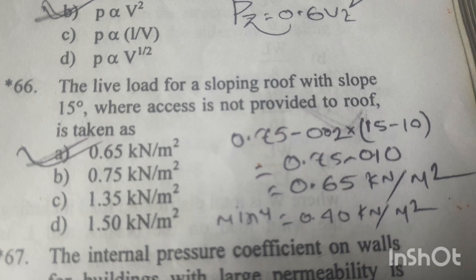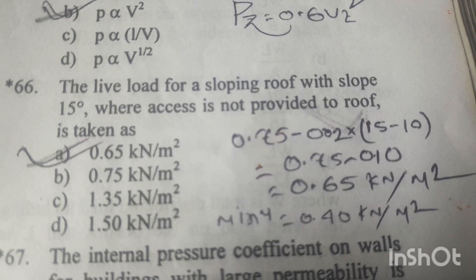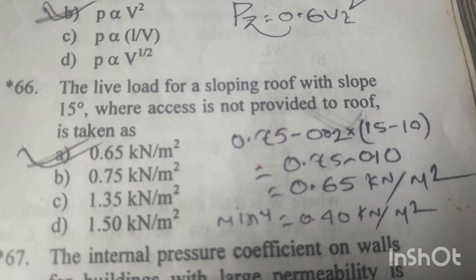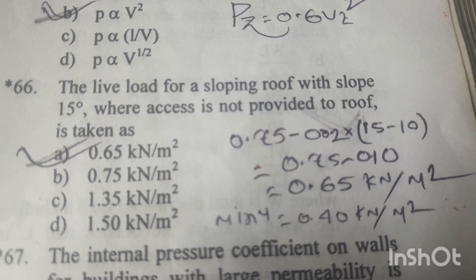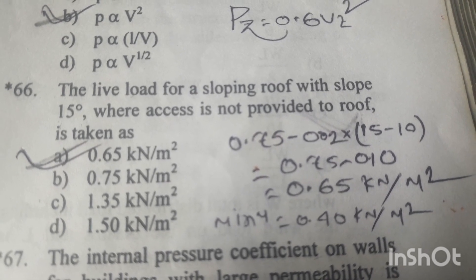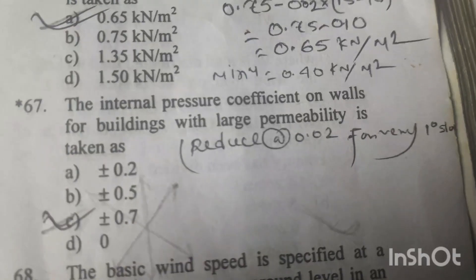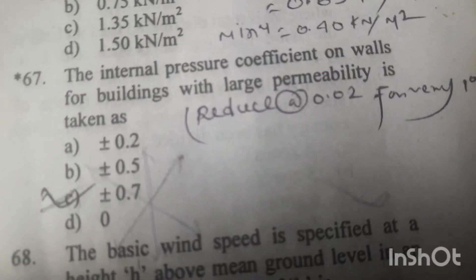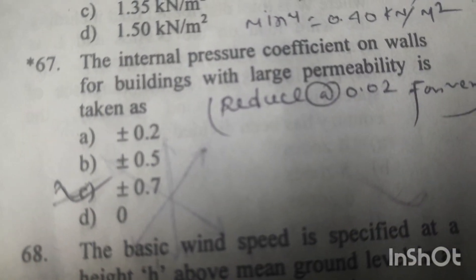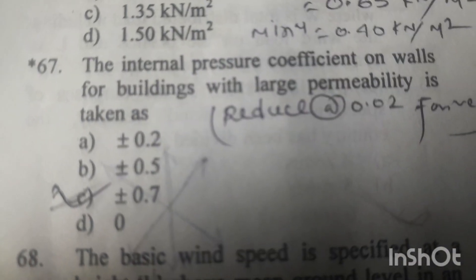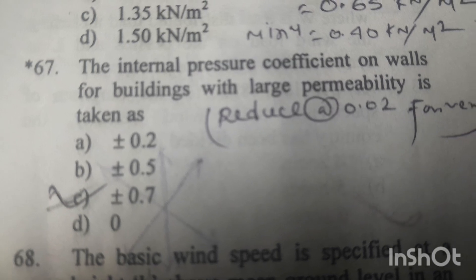Option A is the right answer. The minimum live load for a sloping roof is 0.40 kN/m².